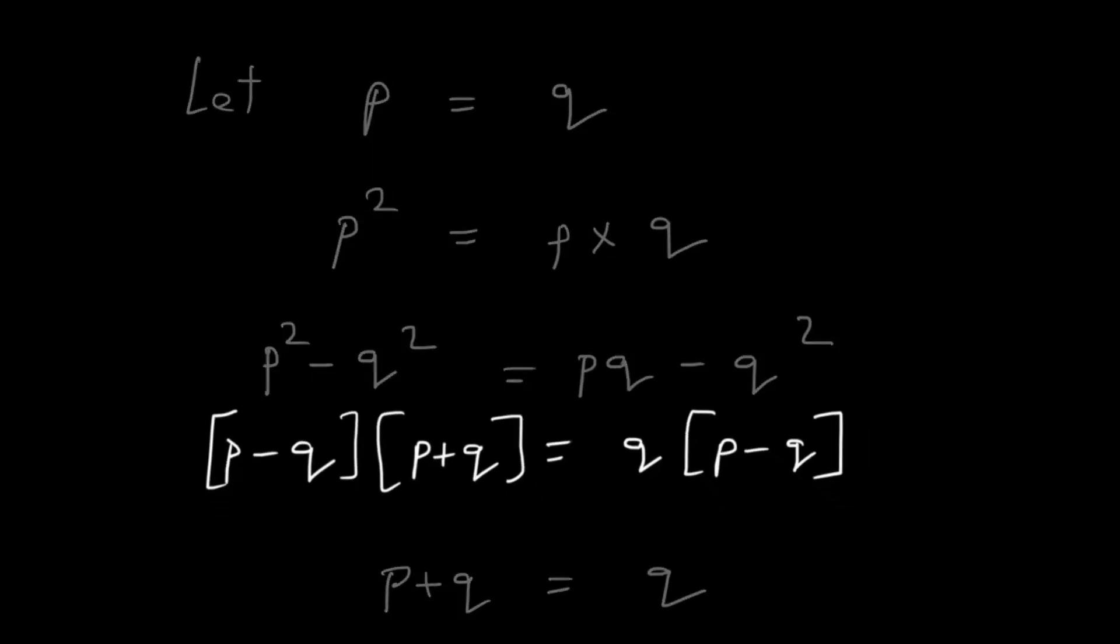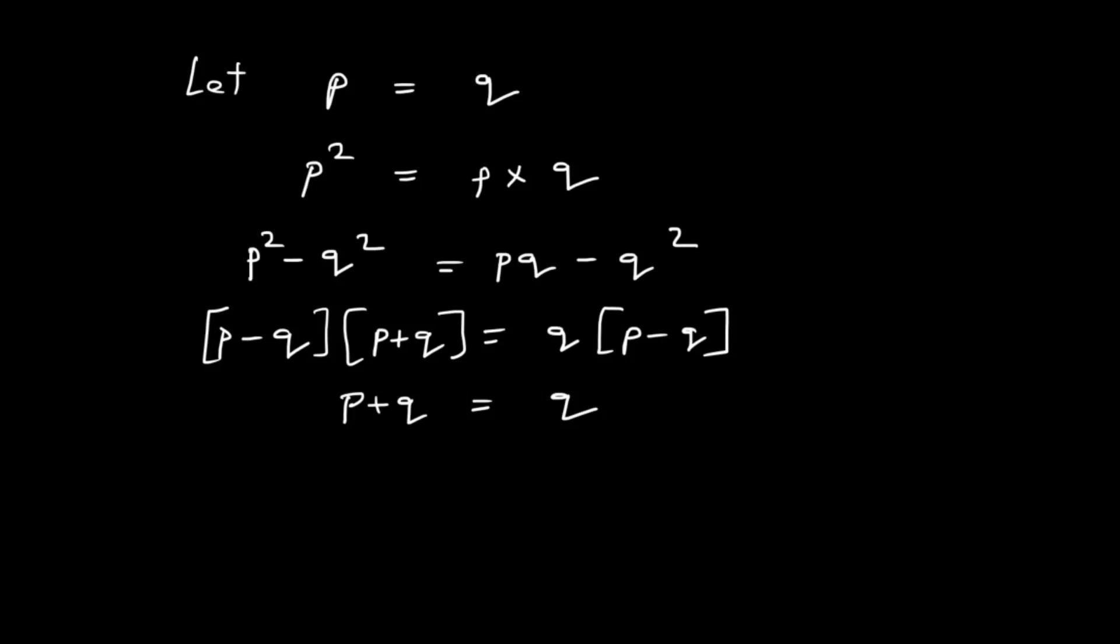Now, in the beginning, we had assumed that P is equal to Q. So, let's replace P with Q. So, our equation becomes Q plus Q is equal to Q or 2Q is equal to Q.